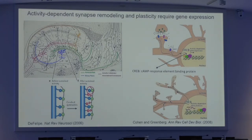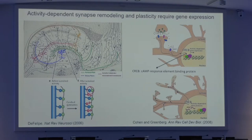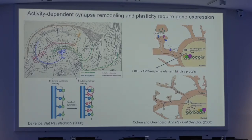In the short term, local events at synapses can change the presence of receptors — glutamate receptors or other neurotransmitter receptors. In the long term, these signaling cascades go to the nucleus to regulate gene expression. One of the main transcription factors related to these plastic changes and also neuronal survival is the CREB — the cAMP response element binding protein. After neuronal or synapse activity stimulation, CREB is activated, induces gene transcription, and these genes can potentiate or stabilize synapses.